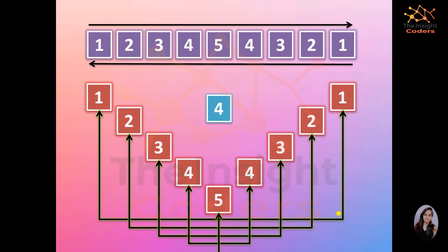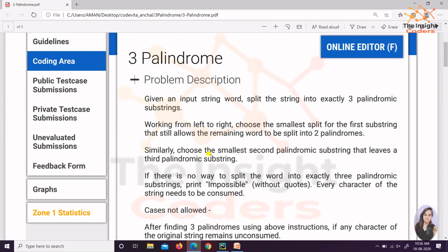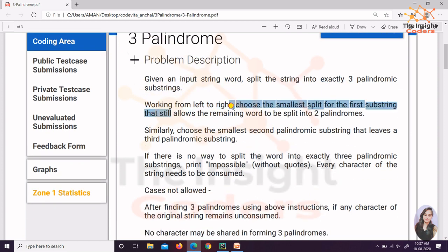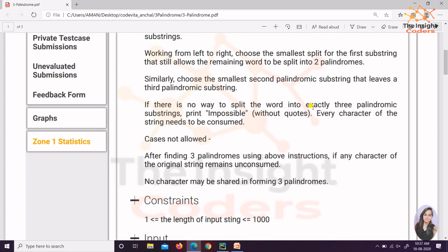Now let's see what the question actually asks and how to solve it. We are given an input string, and this string can be split into exactly three palindromes — that means three substrings which are palindromes. From left to right, we have to split the string into substrings such that we get three palindromes.